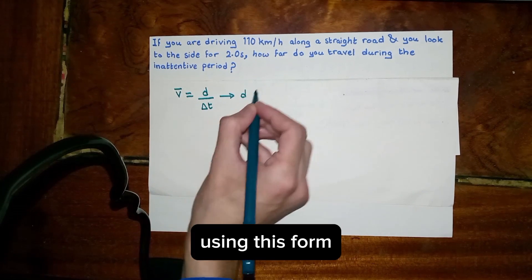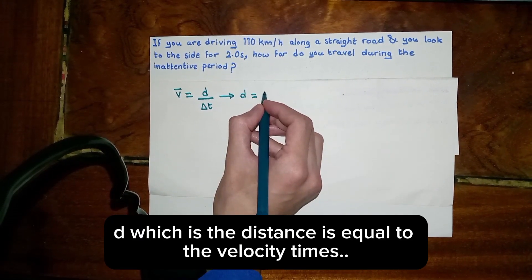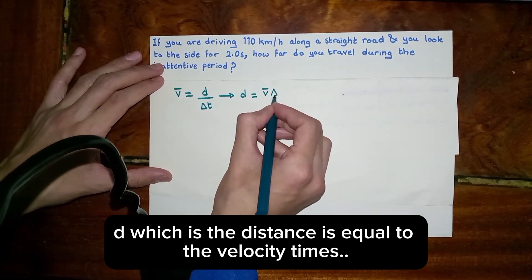Now we can write this equation in this form: d, which is the distance, is equal to the velocity times the elapsed time.